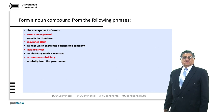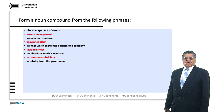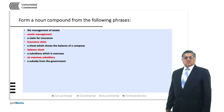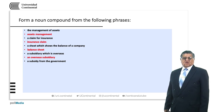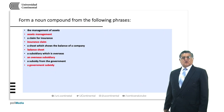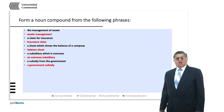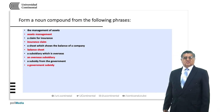A subsidy from the government — that is financial aid or an aid of any type that the government will give to poor people or people in need after a disaster, an earthquake, or any catastrophe. So the noun compound is 'a government subsidy'. In plural, 'government subsidies'.